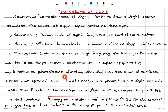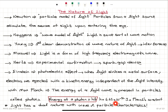Einstein explained the photoelectric effect: when light strikes a metal surface, electrons are ejected with a kinetic energy independent of the light intensity. With Max Planck, the energy of a light wave is present in particles called photons — quasi-particles that are packets of energy, each with energy E = hf, where h is Planck's constant, 6.63 × 10⁻³⁴ joule-seconds, and f is the frequency of light. At the end of this discussion, we realize that light has a dual nature with both wave-like and particle-like characteristics.